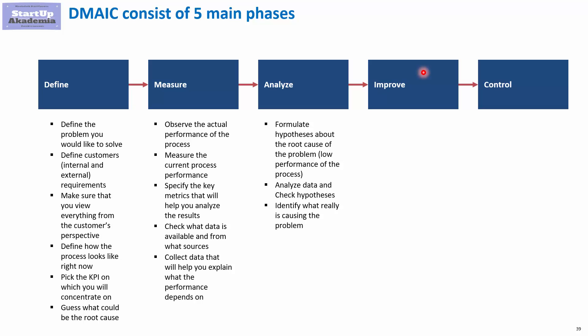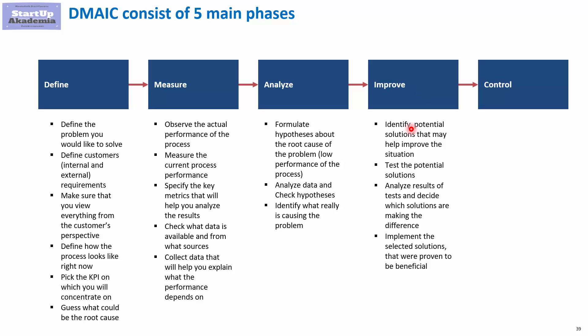In the Improve stage, once you know what is the root cause behind the problem you are trying to solve, you obviously try to find solutions. You start by identifying potential solutions that may help improve the situation. Not all of them will work, so you should test them, analyze the results of the tests, and once you see they are solving the problem and removing the root cause, you can decide what to implement and where.